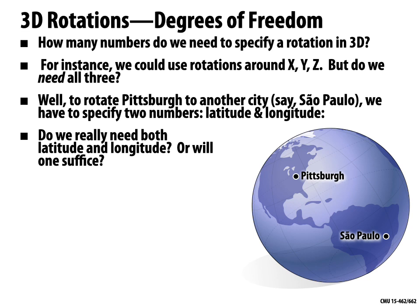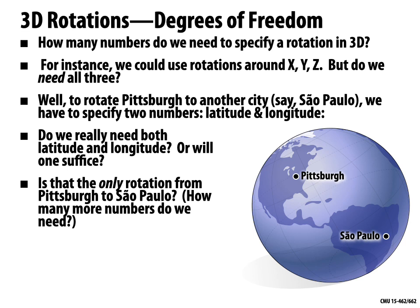We can ask: do we really need latitude and longitude, or will just one of them suffice? No — it really seems like we need both latitude and longitude. We need two numbers to do this rotation. But another important question is: is that the only rotation that will take Pittsburgh to São Paulo? In other words, are two numbers enough? If I want to rotate one point on the globe to any other point, it feels like maybe I can get away with just two numbers — latitude and longitude.